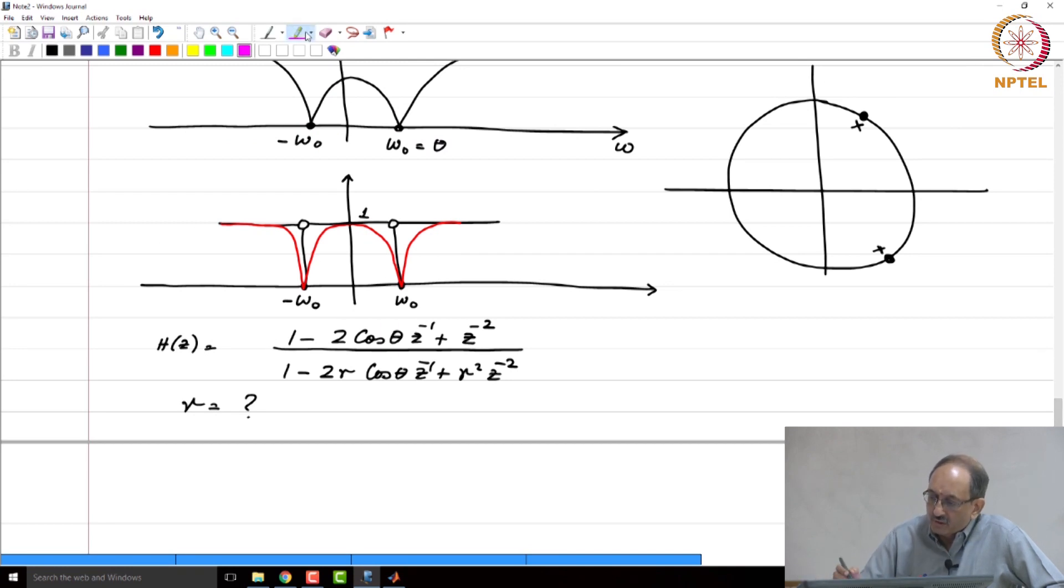For realizability, what you will realize is, you will realize this difference equation. What you are having in mind is, if you want to consider the impulse response and then if you want to convolve the impulse response, then you have to truncate the impulse response to some limit, but that is not how you implement IIR filters. IIR filters will always have infinite duration impulse response and the way they are implemented is in the time domain, you will implement the difference equation.